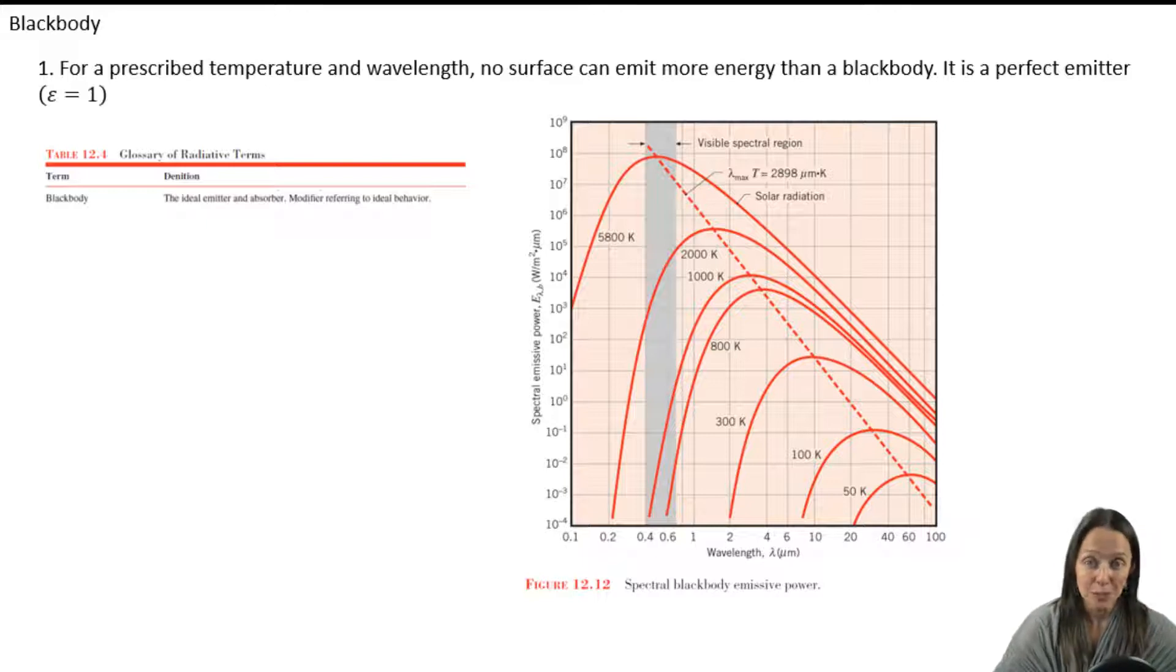EB lambda is the spectral black body emissive power of that black body, which is what the B stands for. And it's expressed in watts per square meter per micron. Note that the emissive power is actually a flux term. It's the rate at which radiation is emitted from a surface per unit surface area per unit wavelength, hence that micron unit.